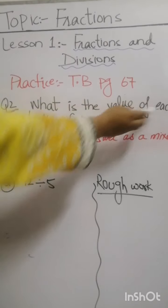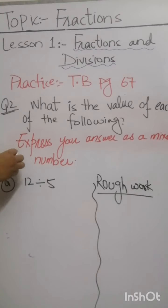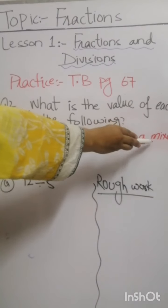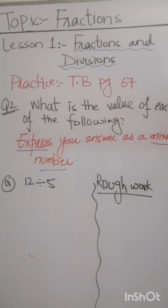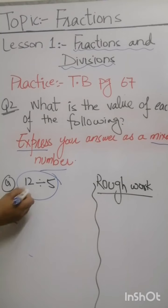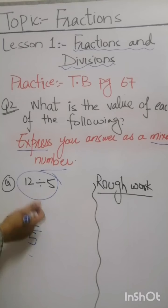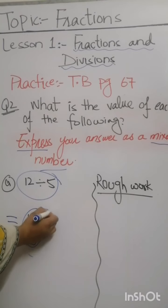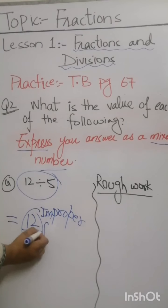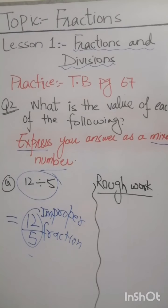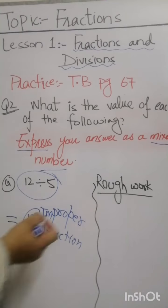Question number two: What is the value of each of the following? We have to express the answer as a mixed number. We rewrite 12 divided by 5 in fraction form as 12 by 5. This fraction is an improper fraction, so it is going to be further simplified to get the answer as a mixed number.